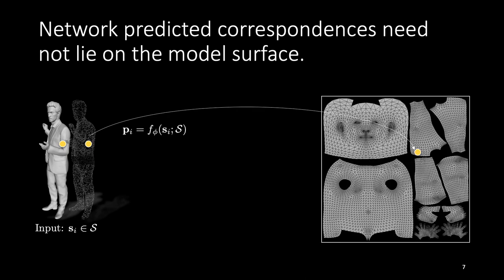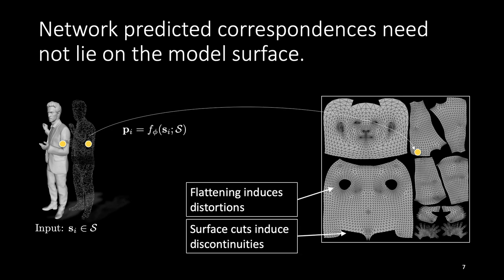Prior work use UV surface parameterization to ensure that the network predictions lie on the surface. But this is problematic because UV parameters involve cutting and flattening the 3D surface which induces discontinuities and distortions.